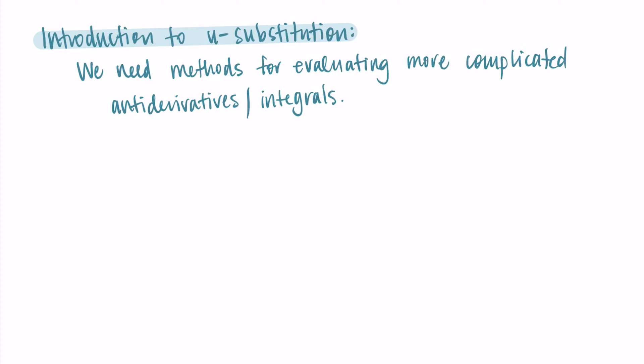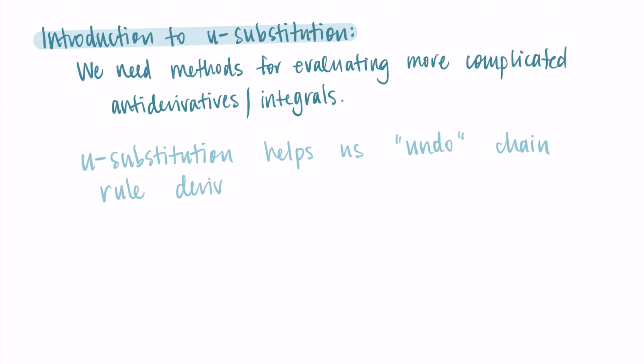The fundamental theorem of calculus tells us that integrating is equivalent to finding an antiderivative, so we need to be able to evaluate more complicated ones. Not everything is going to be as simple as one of the rules we already have. Specifically, u-substitution helps us undo chain rule derivatives — so derivatives that use the chain rule.